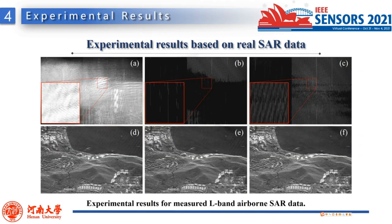Experimental results based on airborne SAR data are shown. In the experiment, the proposed detector and TDD are employed to detect PRFI, and the TNF method is employed to mitigate PRFI. As can be seen in figure B, a number of PRFI which hide in the echoes of strong scatterers are missed by the TDD, while as seen in figure C, the detection performance of the proposed detector is better. Figures D, E, and F show the imaging results with and without PRFI mitigation processing. The mitigation performance based on the proposed detector is superior.